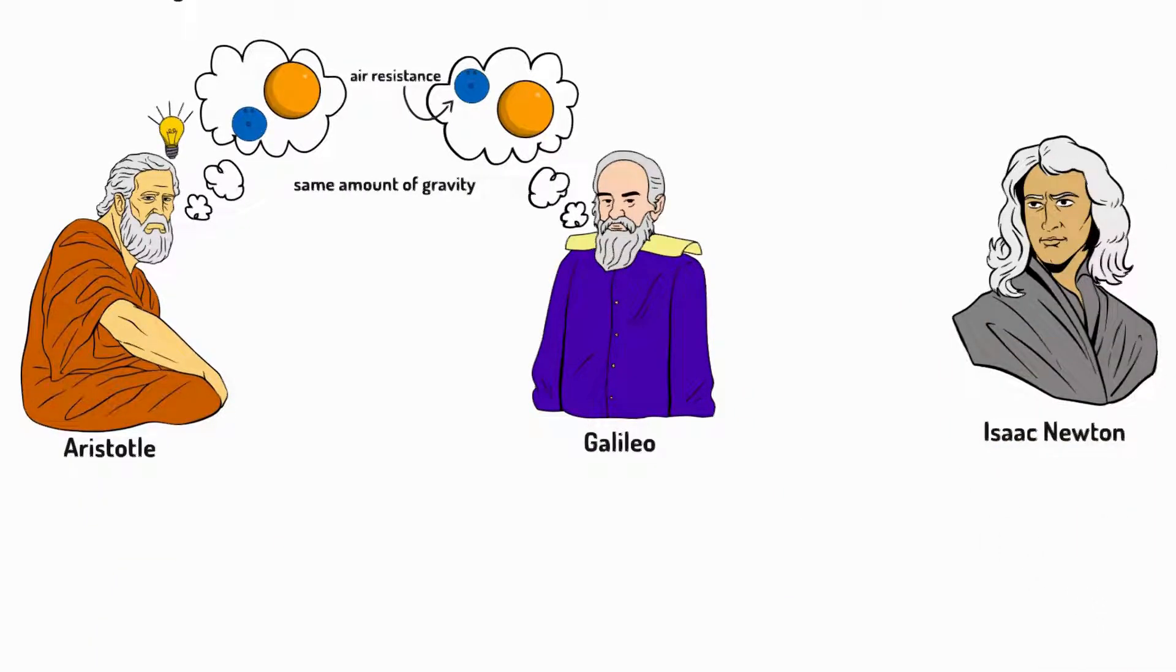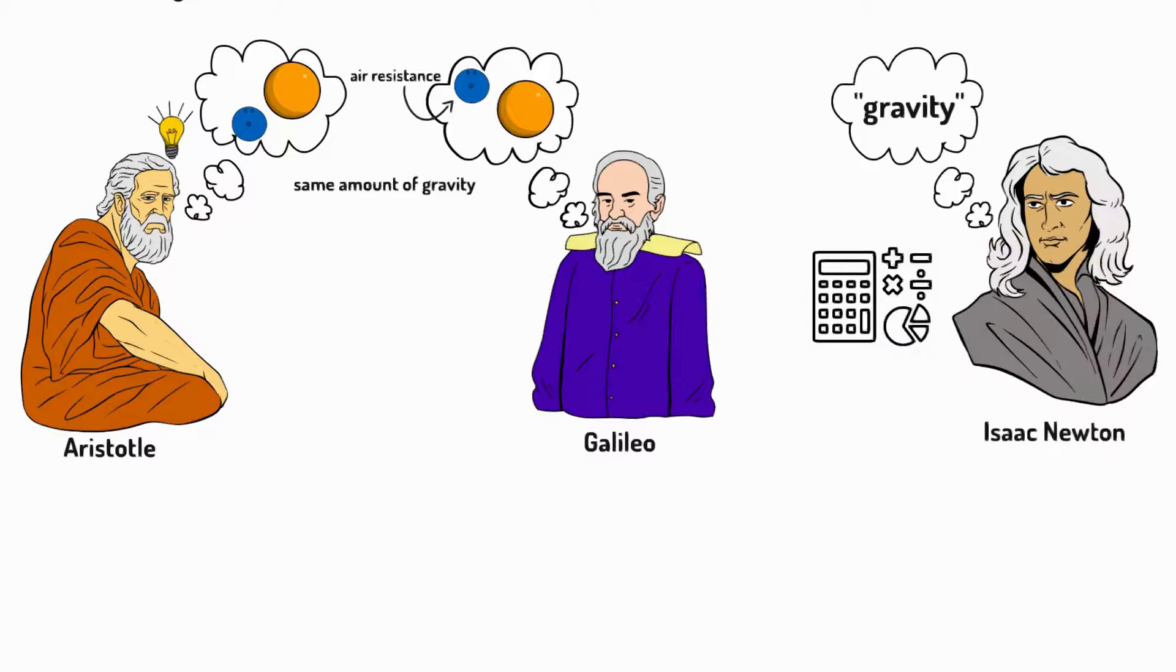Isaac Newton expanded on Galileo's work. He explained in detail why objects fall to the ground in the first place. He came up with the term gravity and used it to describe an invisible force that pulls objects towards each other. Newton also used maths to make predictions about gravity and its behaviour.